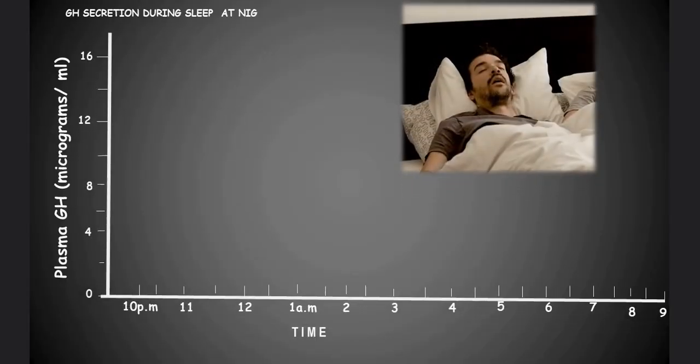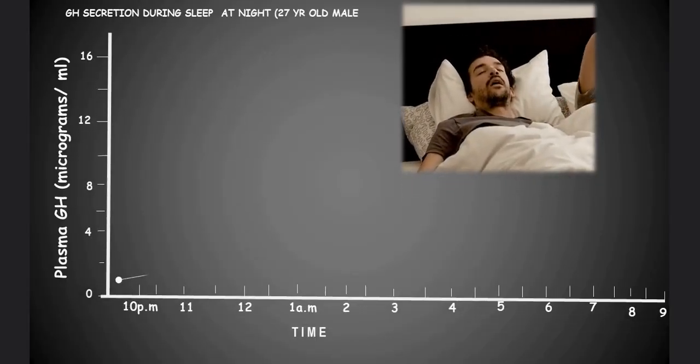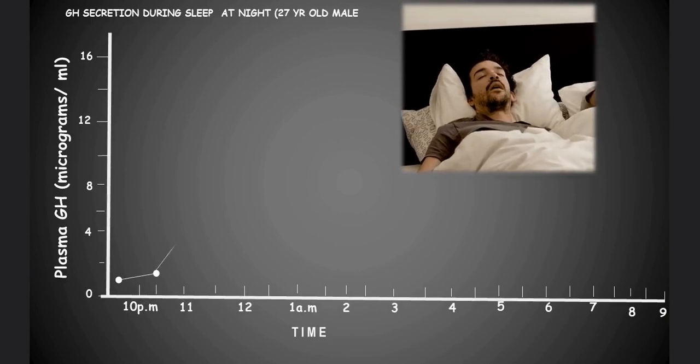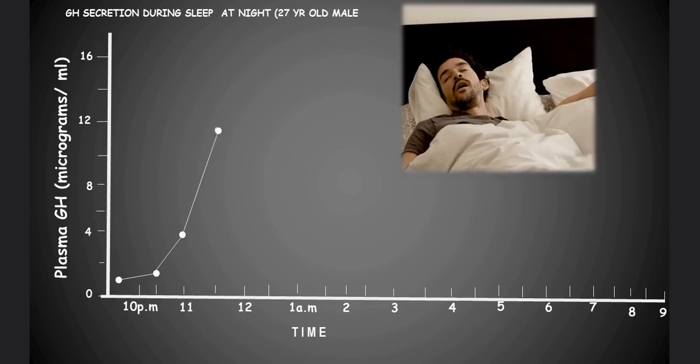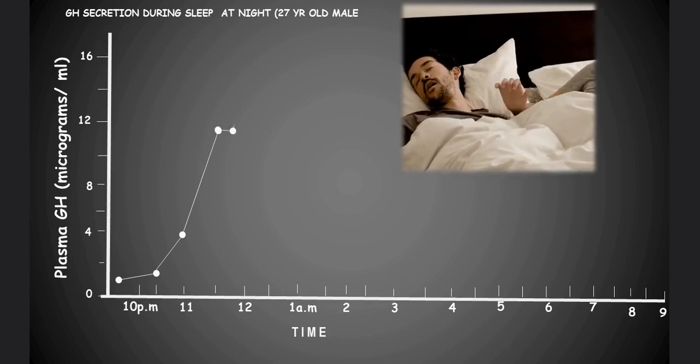During deep or slow-wave sleep, there is an increase in GH secretion. This peak of GH secretion during sleep is essential for body growth and muscle development, as well as tissue regeneration and repair.